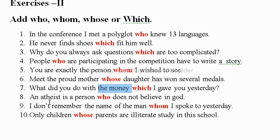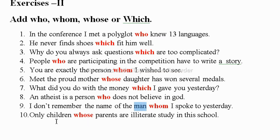Next: An atheist is a person who does not believe in God — talking about a person, so we take 'who'. Next: I don't remember the name of the man I spoke to yesterday — talking about a man (human), so we take 'whom', the objective pronoun. Next: Only children whose parents are literate study in this school — children's parents shows possession, so instead of apostrophe-s we take 'whose'.